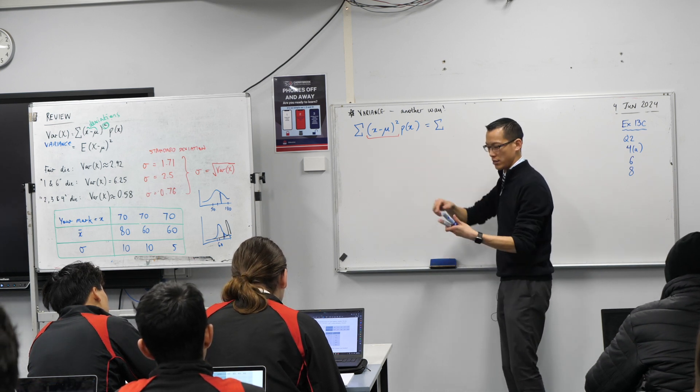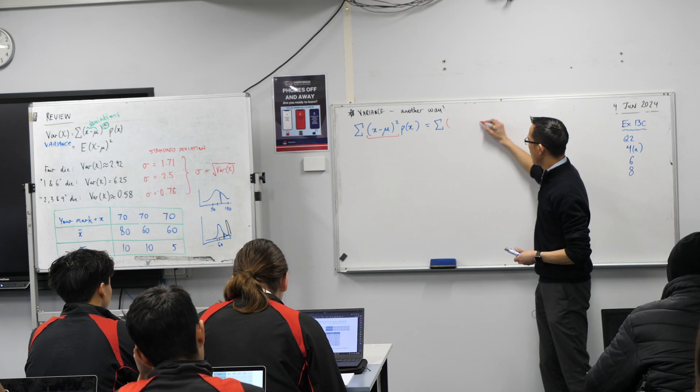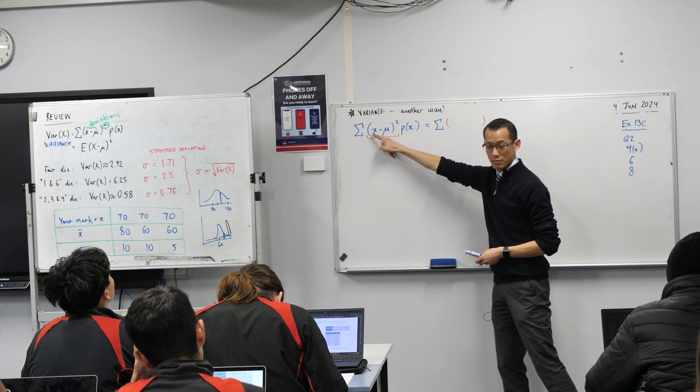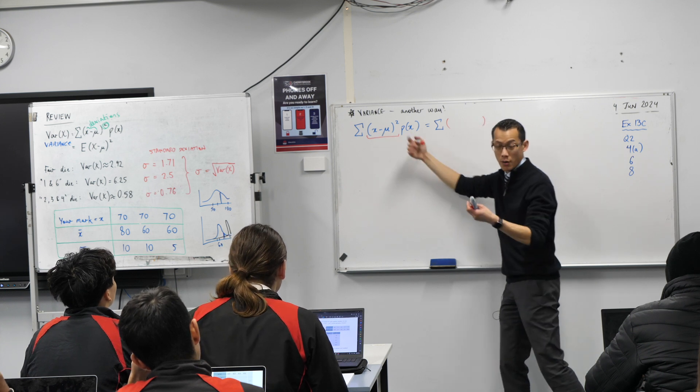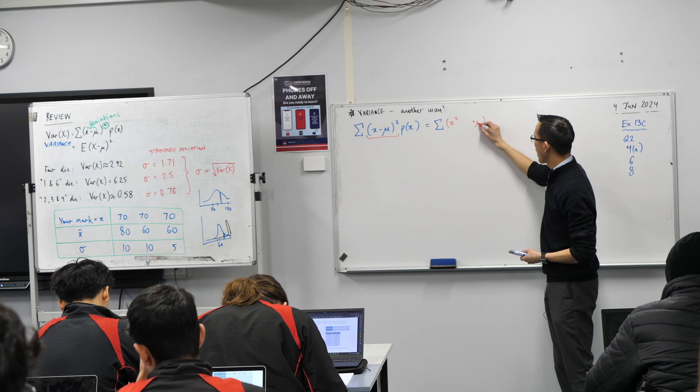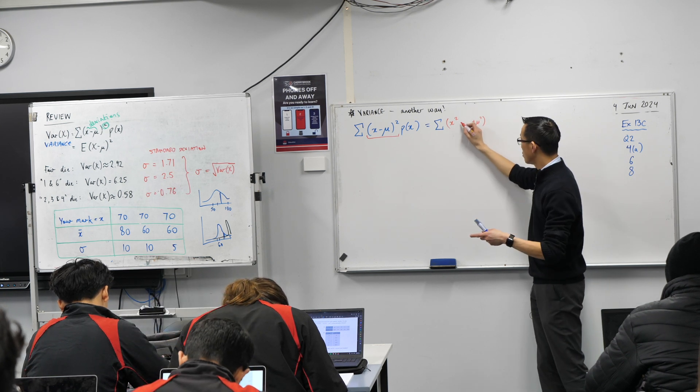If I were to square this whole thing, square the first, square the last, twice the product, yeah? So let's go ahead and write that. I'm going to get square the first, I'll square the last as well, and then what's in the middle? 2x mu.